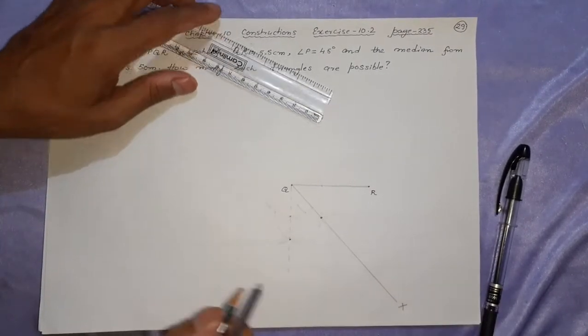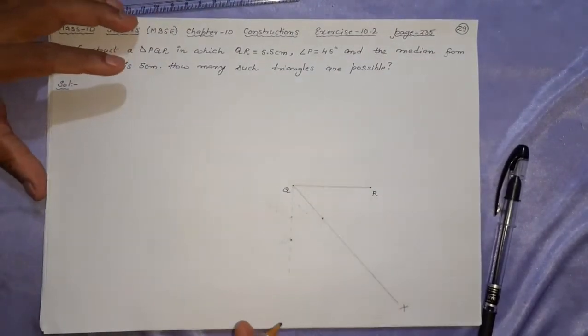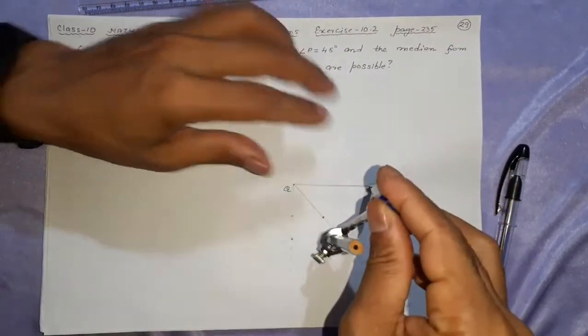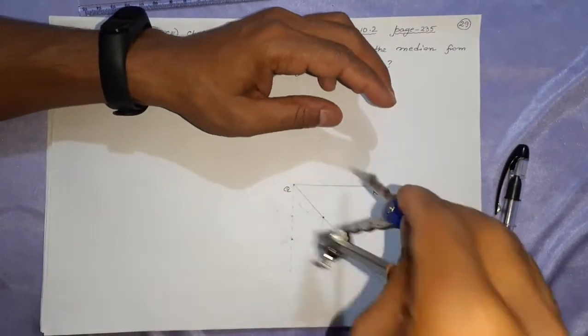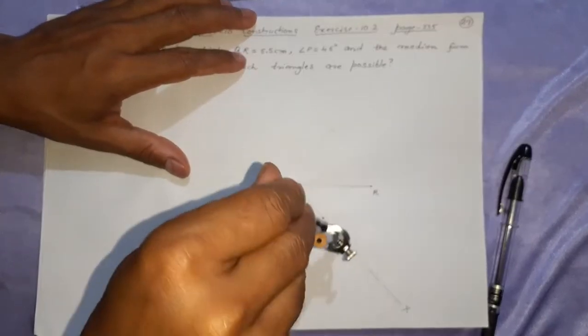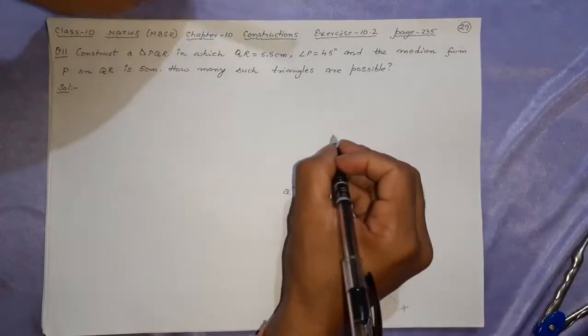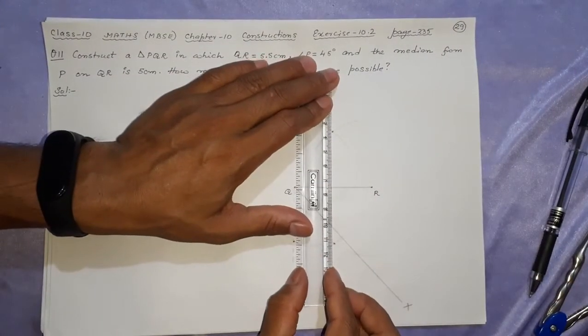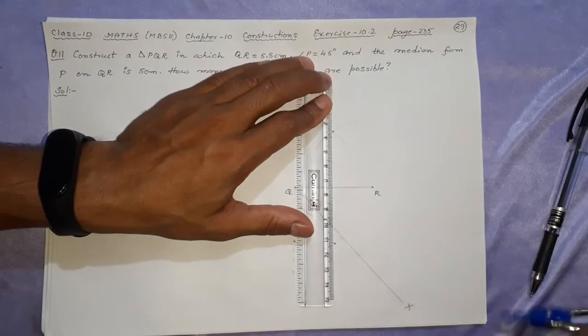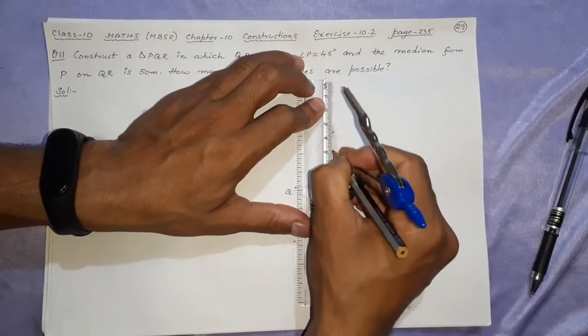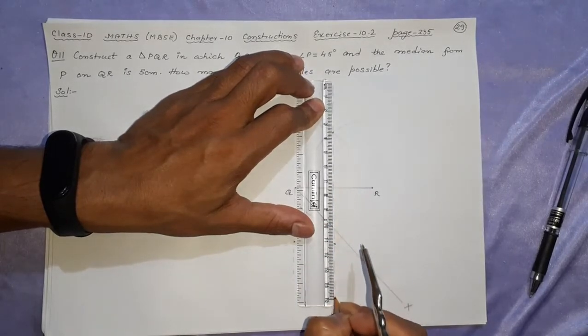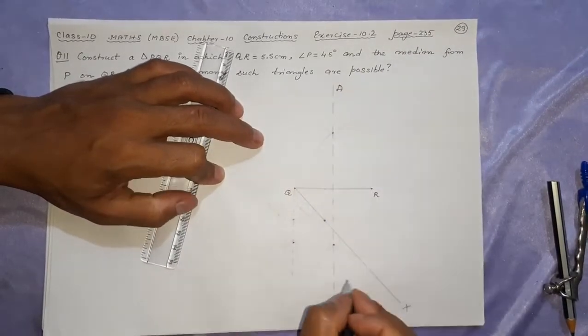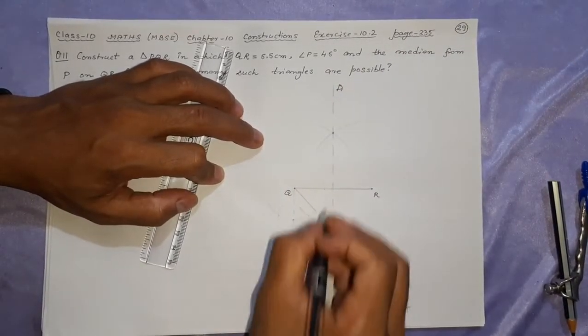Now perpendicular bisector of QR. Take more than half, up here, down here, go here, up, down here. Join these two points, perpendicular bisectors. What will be the name? I'll name them AB because PQR is already used. Here it will be still M.